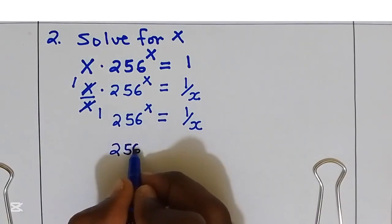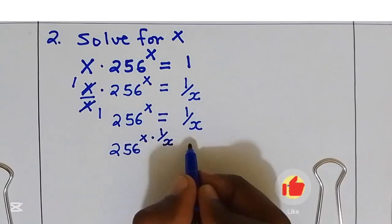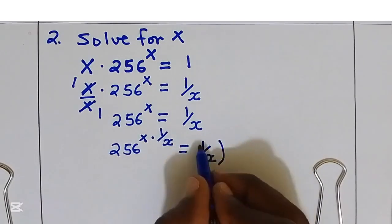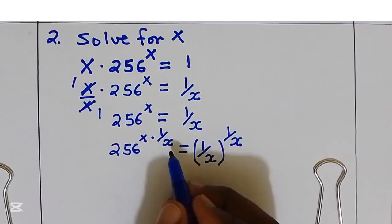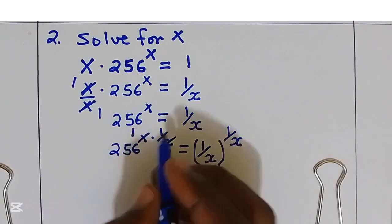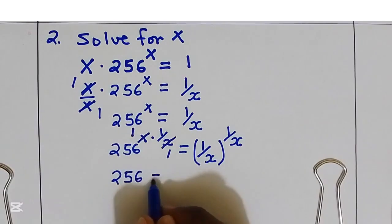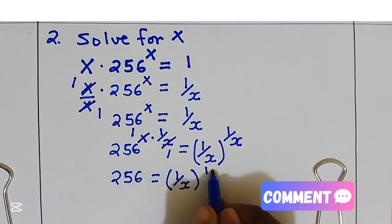256 power x, I'll multiply by 1 over x. This is equal to 1 over x multiply by 1 over x. We get 256 is equal to 1 over x power 1 over x.